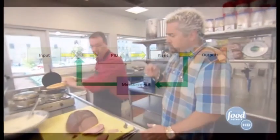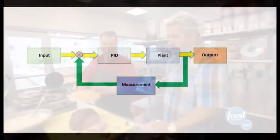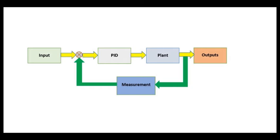In a continuous feedback loop, the plant's state is measured based on external inputs. Then the state is evaluated. A control law is implemented to change the plant's properties. The state is then re-measured, and the loop repeats itself until the desired output is met.